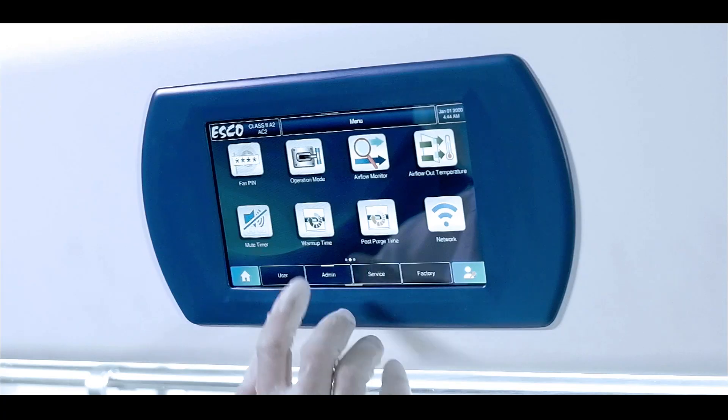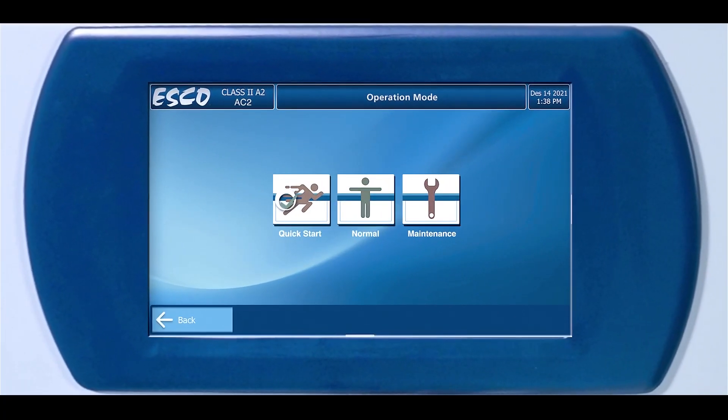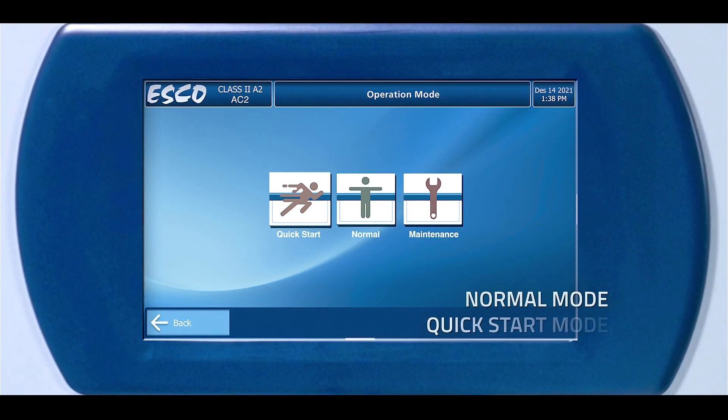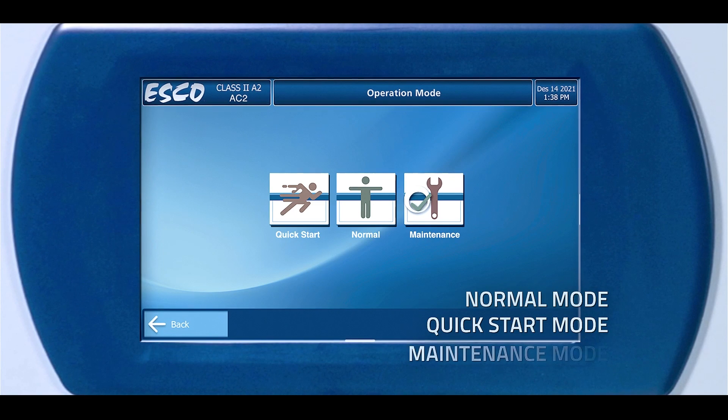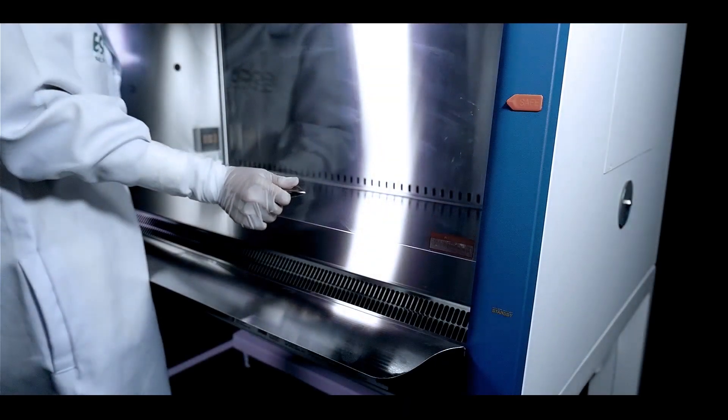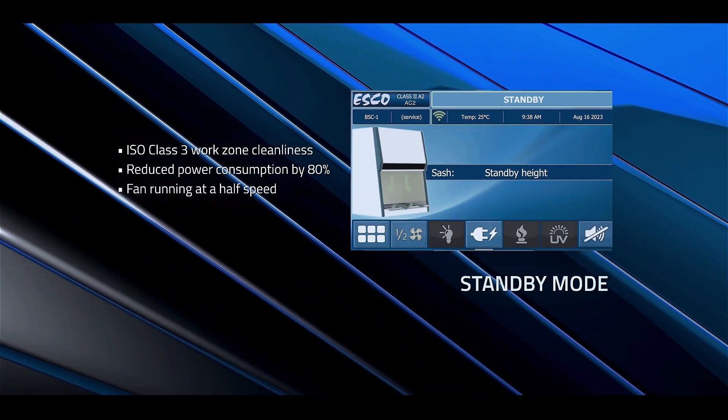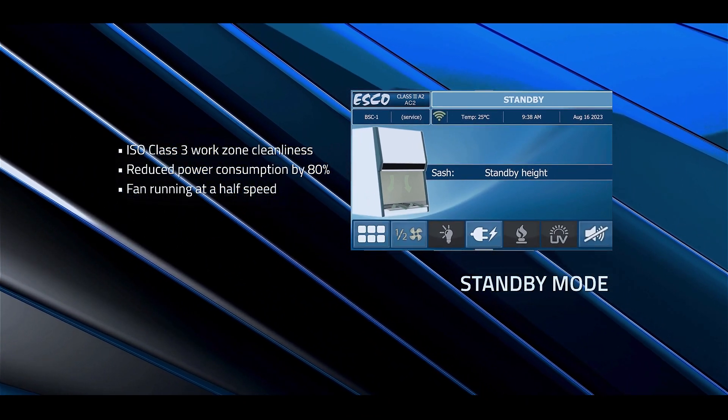ESCO AC2NS G4 has specified modes for accurate functions: Normal mode, Quick start mode, and Maintenance mode. Standby height activates standby mode maintaining ISO class 3 work zone cleanliness while the fan runs at reduced speed.